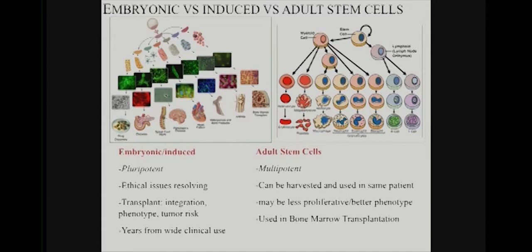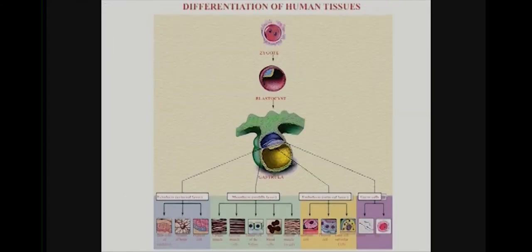In bone marrow transplantation you have hematopoietic stem cells which can give rise to all the lineages that correspond to our blood. Those are very useful to transplant because you can reconstitute the entire blood system. This is a useful summary of ectoderm, mesoderm, and endoderm.